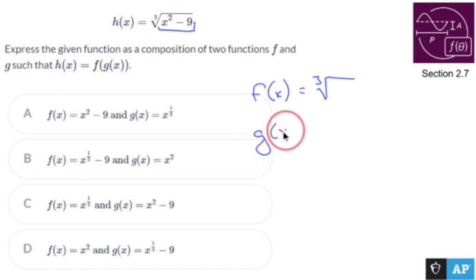And g is the stuff living inside it, which is x squared minus nine. I have to put x in there. Can't forget that.